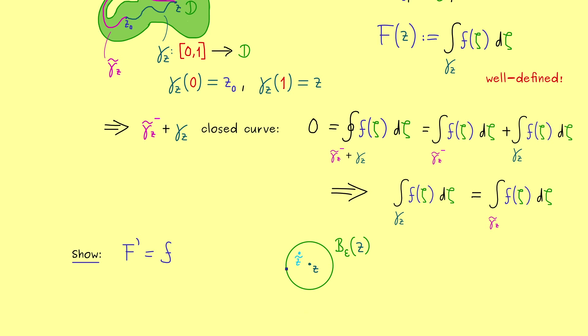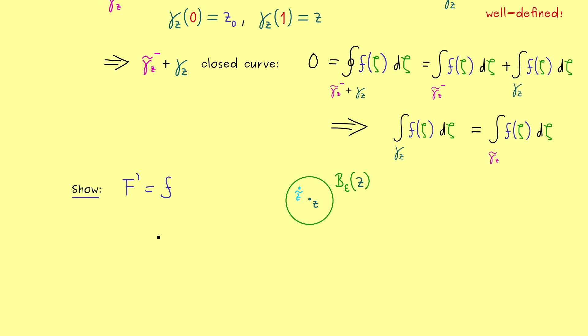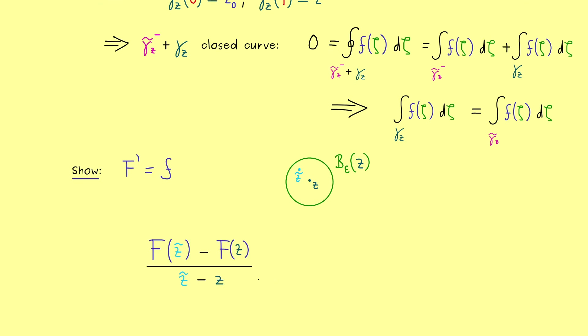We need that because we want to calculate a difference quotient to get the derivative in the end. More precisely, this difference quotient should converge to f of z. And therefore, we look at this difference quotient minus f of z. We do this because then we can look at the absolute value and apply some estimates.